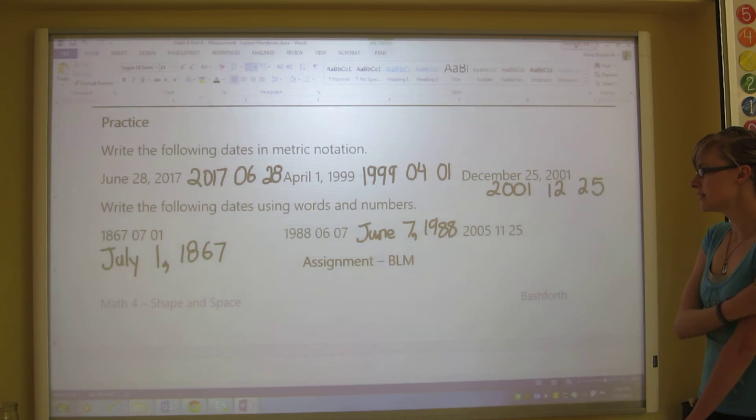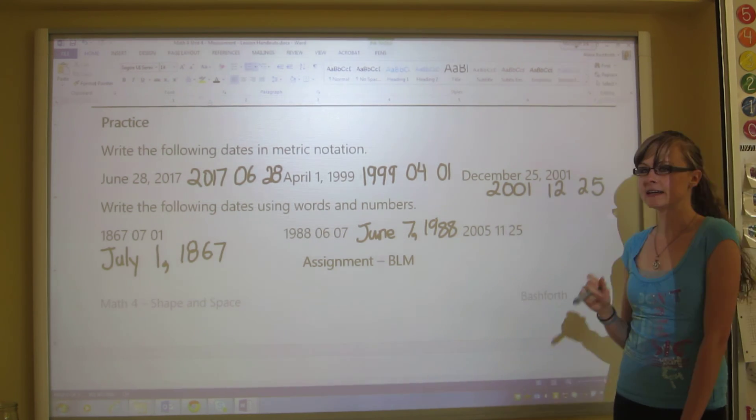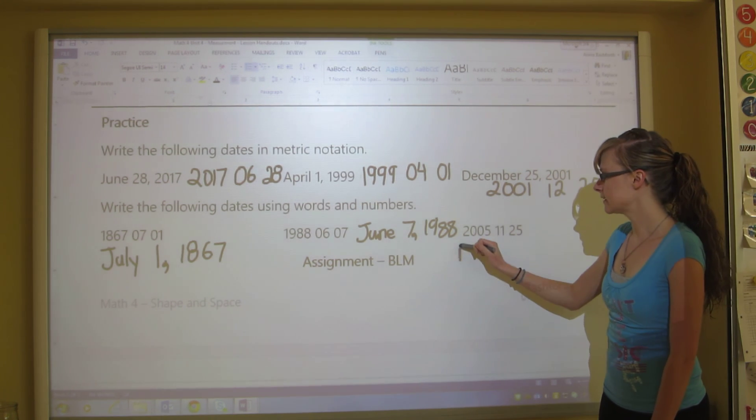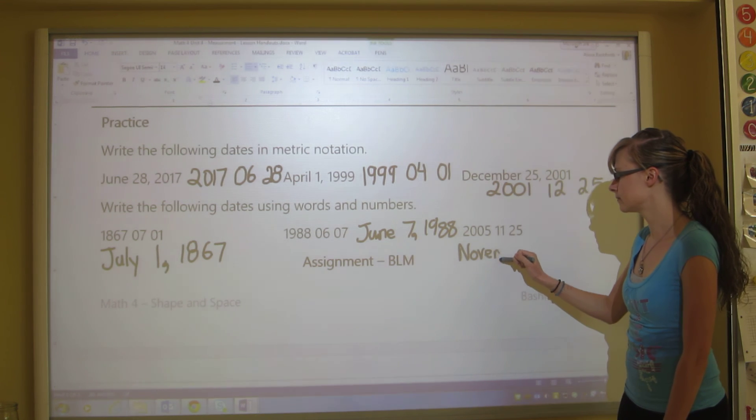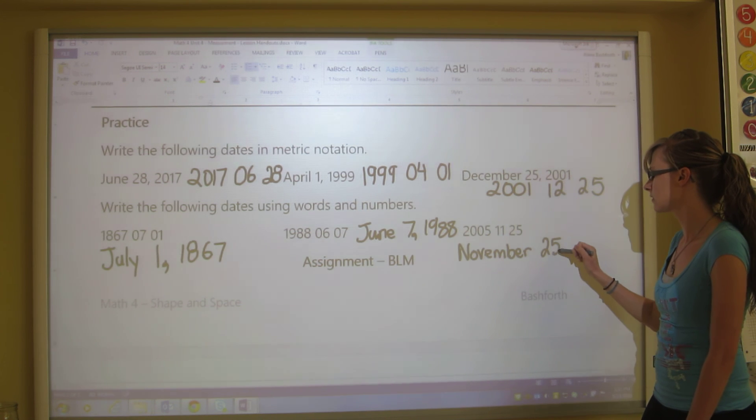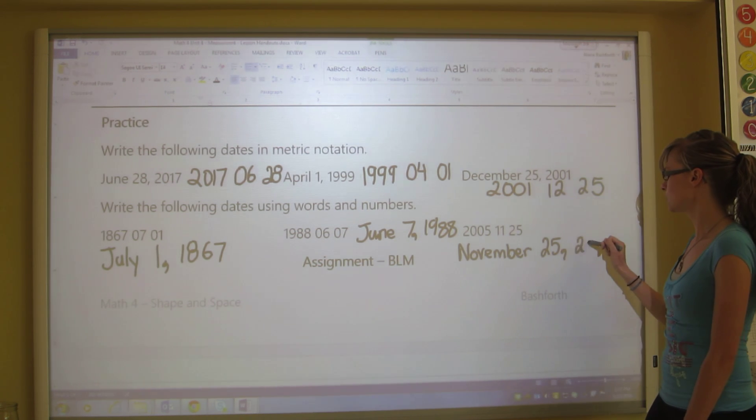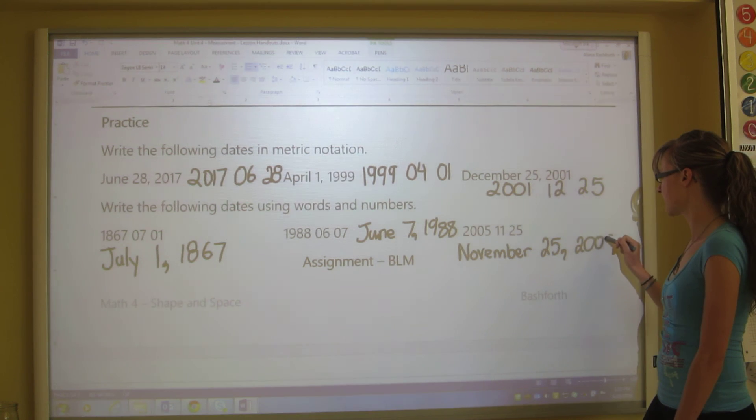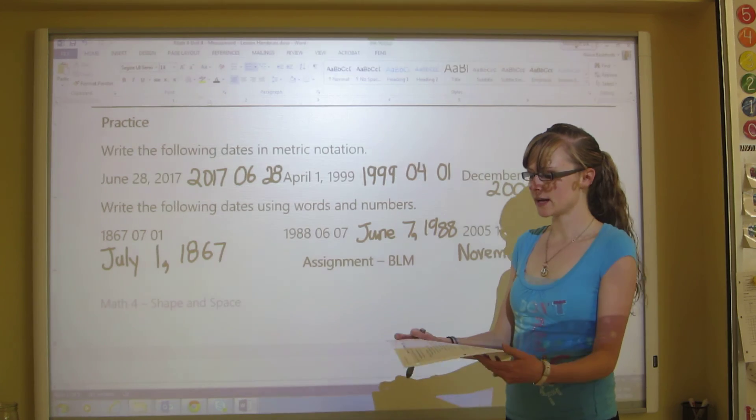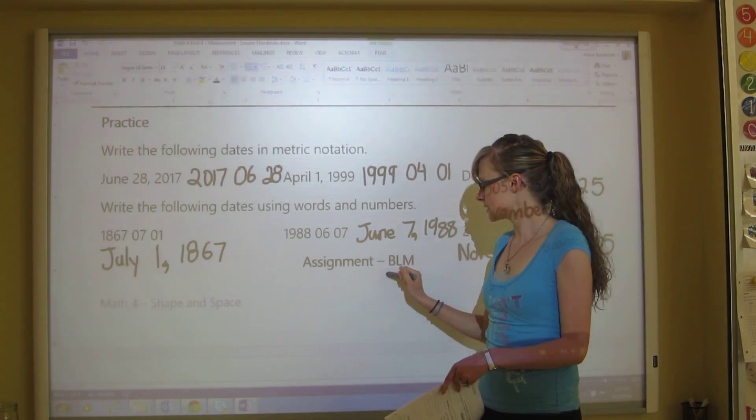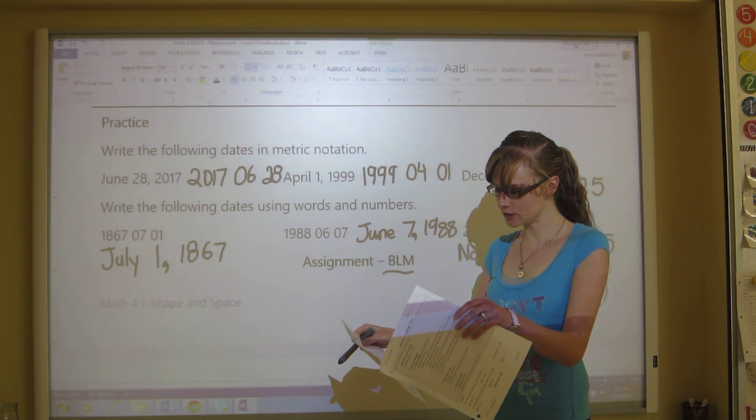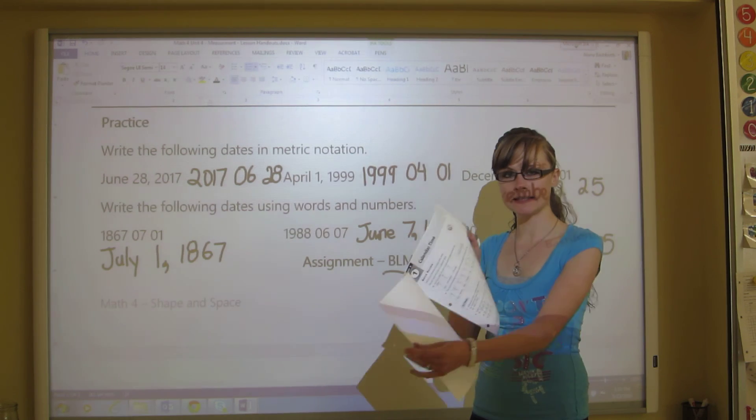And the last question here says 2005, the 11th month is November, and we've got 25th here. So we write the full word of November, 25th, 2005. And then we're done. So that's the basics of this assignment. And you'll notice that you don't do a textbook assignment because we're running low. So you're just going to do a BLM for this one. And it's attached.